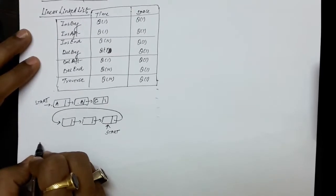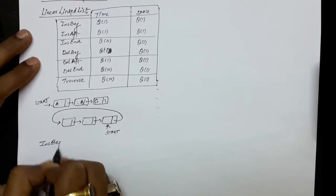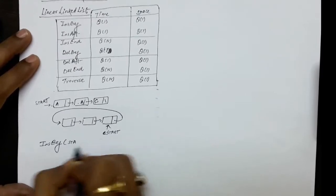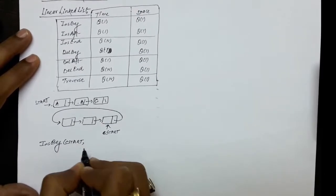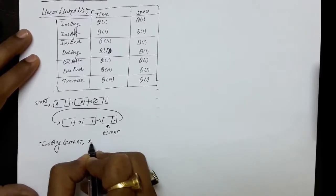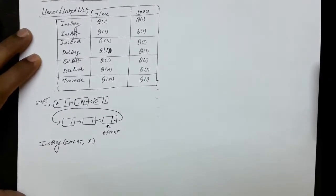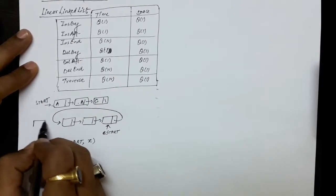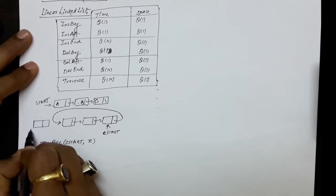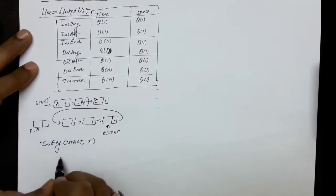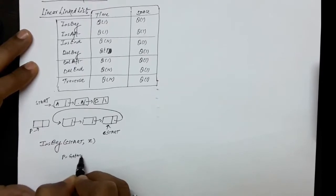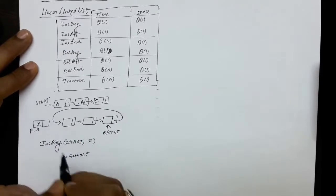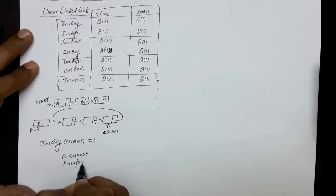The first algorithm is insert beginning. We will use C start to differentiate it from the linear linked list. X is the information which is required to be inserted in the circular linked list as the first node. To insert as a first node, we call the get node function: P equals to get node, which gives us a new node. Then we store the information: P dot info equals to X.